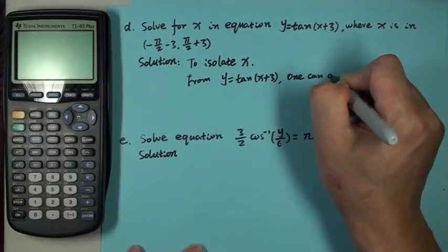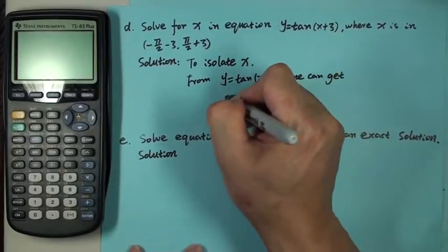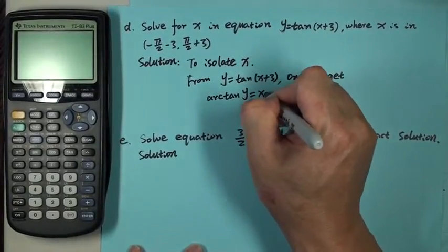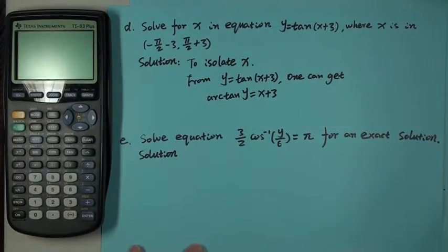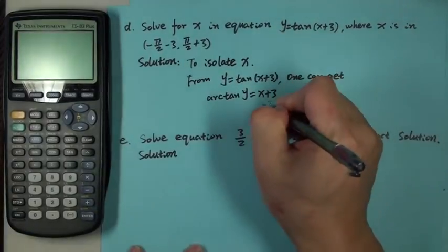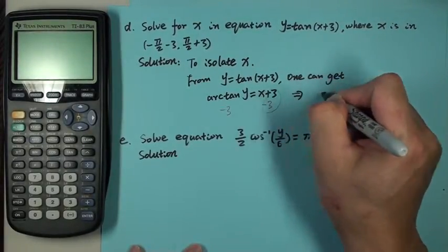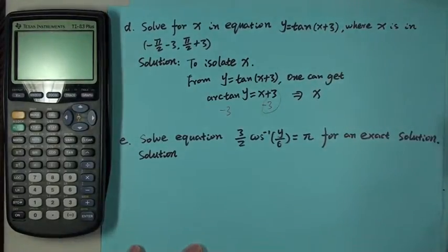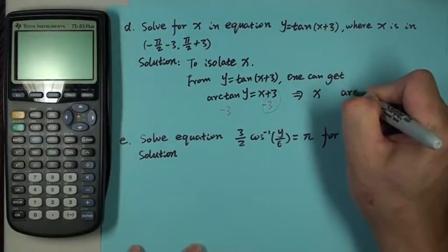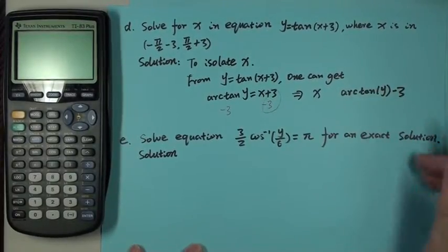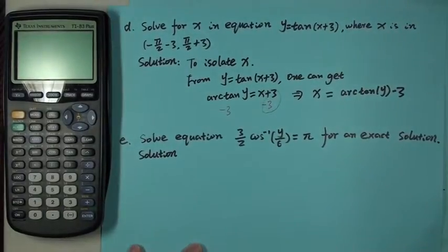If you isolate x, here is x plus 3, so then from y equals tangent x plus 3, we will get arc tangent y equals x plus 3. Now, both sides subtract 3. Then we get x plus 3 minus 3 will cancel each other. Then we will have x stands alone on the right. On the left hand side is arc tangent y minus 3. That's it.